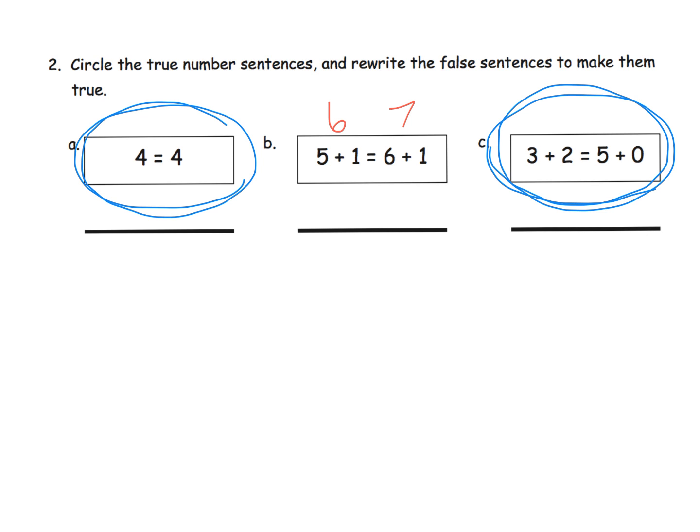So one way that the students could make it a true statement is maybe they cross off the one and make it a zero. So now you have five plus one is equal to six plus zero. That is not the only way they could have solved it. There's a whole ton of other ways they could have solved it. And parents and teachers, as long as what the student ends up writing is true, run with it. It's perfectly fine.